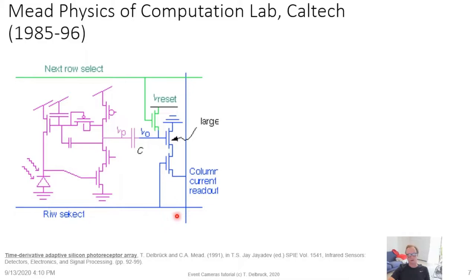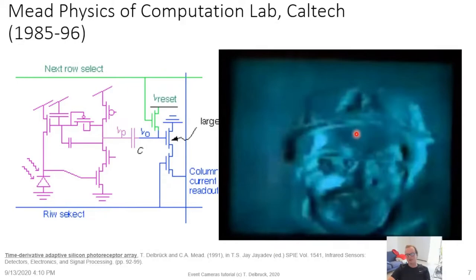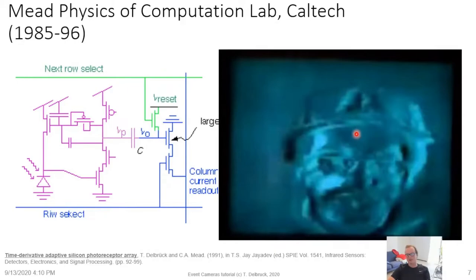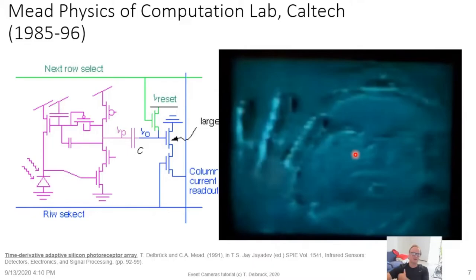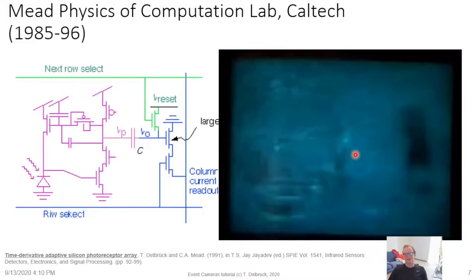The pixel photoreceptor signal was coupled to a source-follower readout — much like current active pixel sensor CMOS image sensors. When a particular row is selected, the voltage signal is read out on a column current readout. When the next row is selected, it resets the previous row by tying a node to a reset voltage, so each frame effectively reads out the difference from the previous frame. You can see this in a video of Kwabena Boahen, then a PhD student in Carver's lab — it just responds to changes. The pixels were about 60 microns on a side, with about 32 pixels per side.